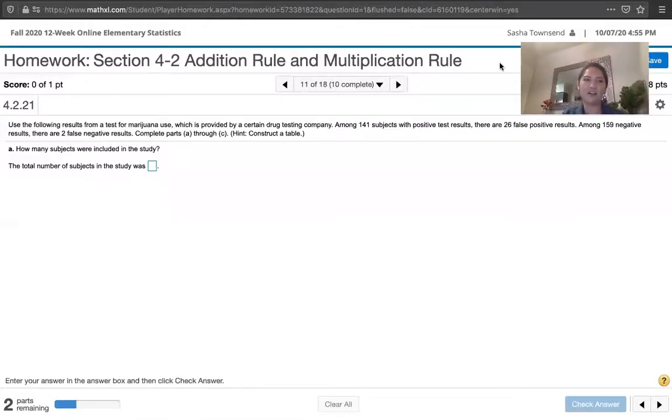In this video, we solve problem 4.2.21 from Essentials of Statistics, 6th edition by Mario Triola. We're asked to use the following results from a test of marijuana use, which is provided by a certain drug testing company.